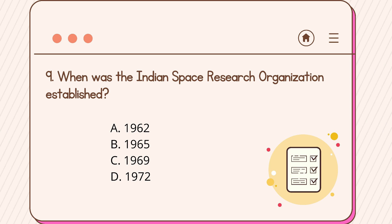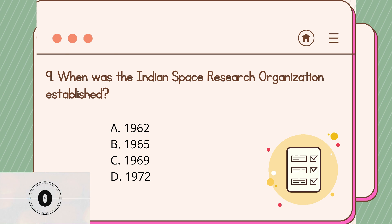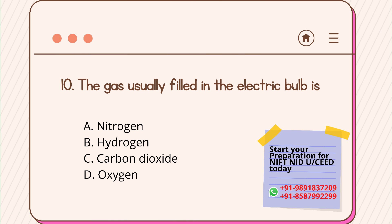Question number nine: when was the Indian Space Research Organization established? Option A: 1962, Option B: 1965, Option C: 1969, Option D: 1972. The correct answer is Option C, 1969.